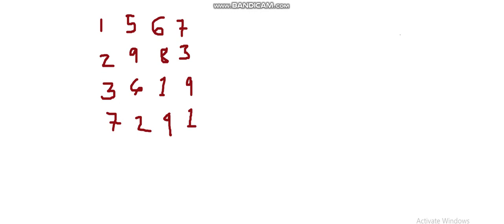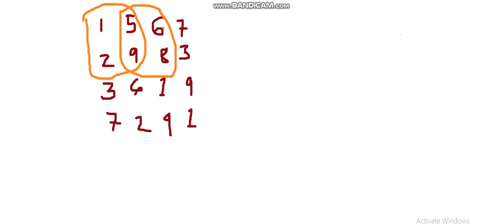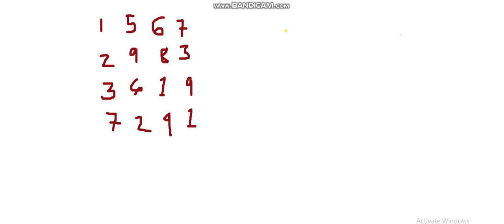We are going to find the maximum of all the sub-matrices of size 2x2. We have to find the maximum of all such sub-matrices. If we have a 1D array, like [1, 5, 6, 7], we need to find the maximum using a sliding window of size k=2. For this, we use a method with a double-ended queue (deque), where we push all the indices into the deque.